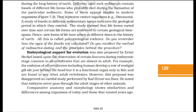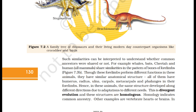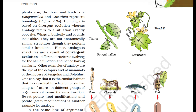Comparative anatomy and morphology shows similarities and differences among organisms of today and those that existed years ago. Such similarities can help us understand whether common ancestors were shared. For example, whales, bats, cheetah and humans — all mammals — share similarities in the pattern of bones of forelimbs. Though these forelimbs perform different functions, they have similar anatomical structure. All of them have humerus, radius, ulna, carpals, metacarpals and phalanges in their forelimbs. The same structure developed along different directions due to adaptations to different needs. This is divergent evolution and these structures are homologous. Homology indicates common ancestry.